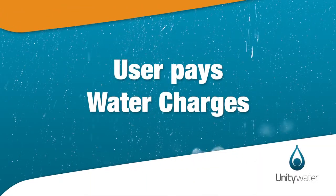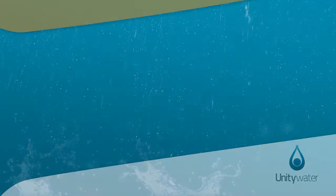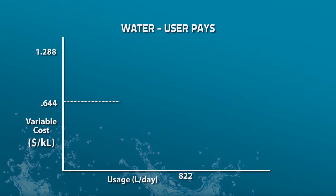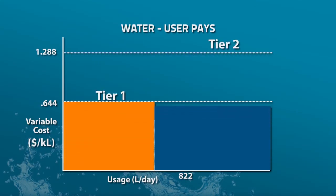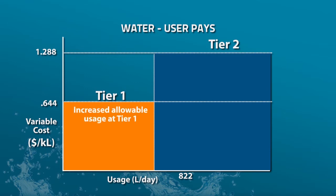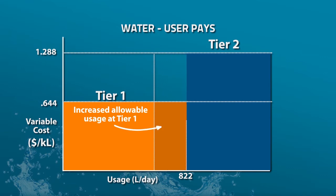A standard two-tier water usage system will apply under the new pricing structure, with a lower rate for the first tier to encourage you to conserve water. We've also increased the allowable usage threshold for Tier 1, so you can now use more water at the lower rate before you move into the higher tier.